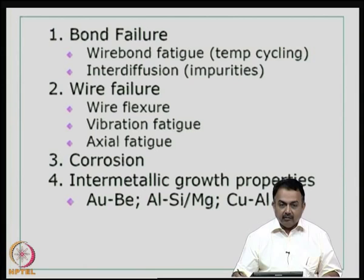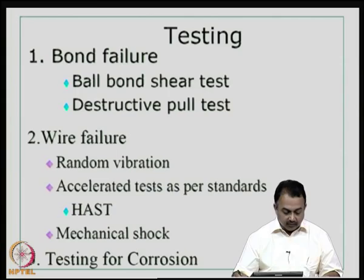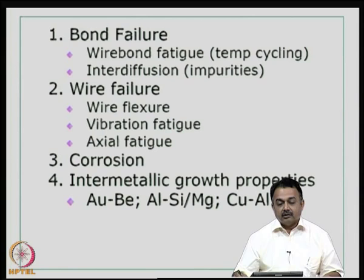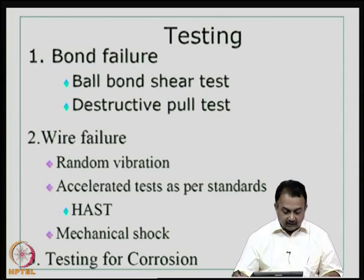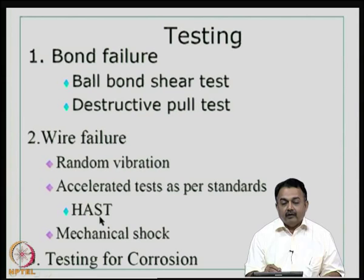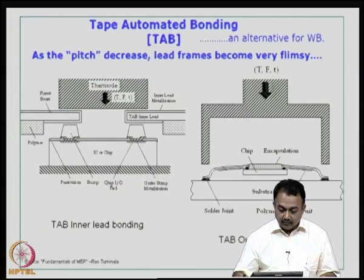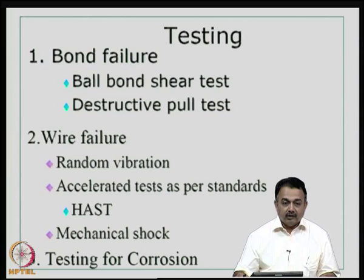Wire failure, wire flexure, vibration fatigue, and axial fatigue depend on the application. Corrosion from the materials used and the harmful effects of intermetallic growth materials are also concerns. You have to do testing — ball bond shear test or the destructive pull test after the bond has been formed — and other mechanisms like random vibration test because wire bond is subject to fail during vibration. Accelerated test as per standards: HAST stands for Highly Accelerated Stress Test, where you set up certain temperature and humidity conditions as per military standard or other industry standards and look at how your wire bonds perform or survive. You can also do standard mechanical shock test, vibration shock test, and testing for corrosion.